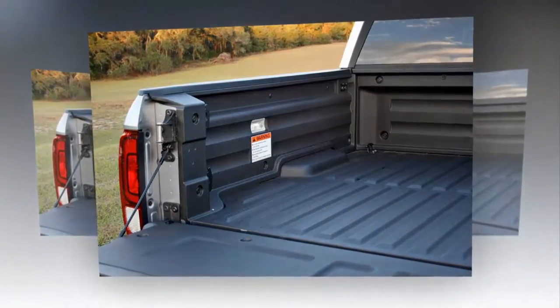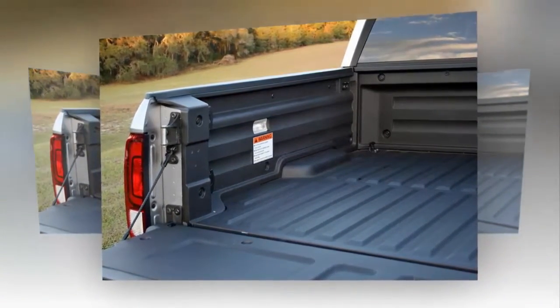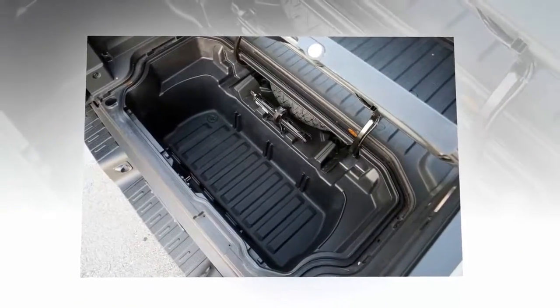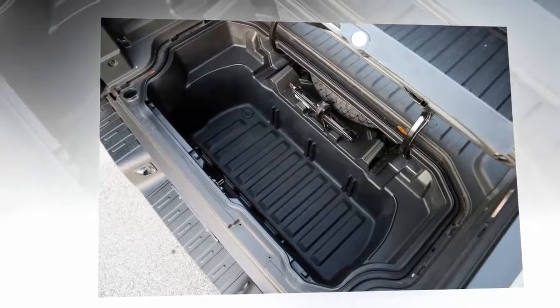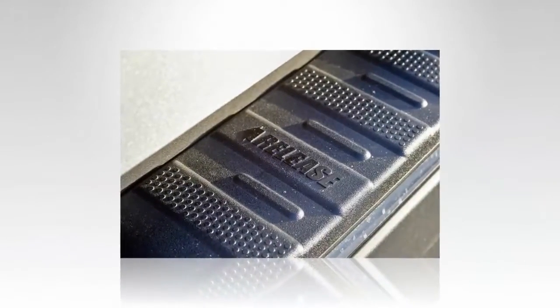The cargo bed measures 5.3 feet long by 5.0 feet across, meaning it's the largest of the standard length cargo beds in the midsize truck class. Like the first generation, the Ridgeline offers the in-bed trunk and dual action tailgate.